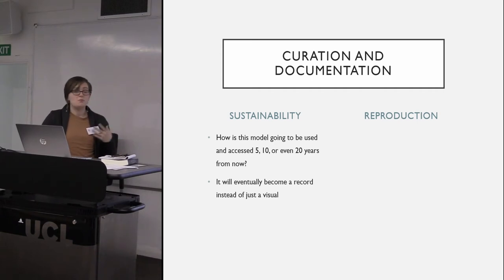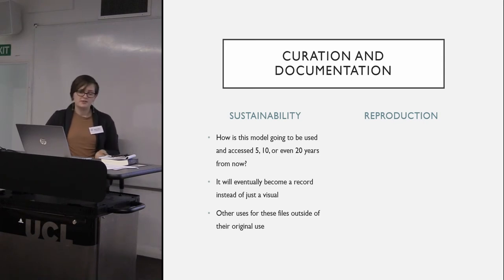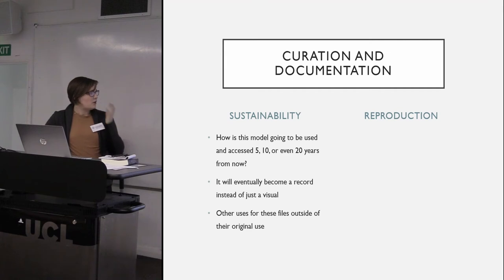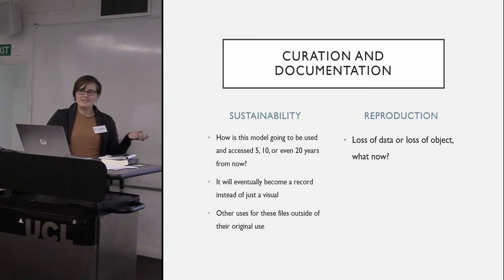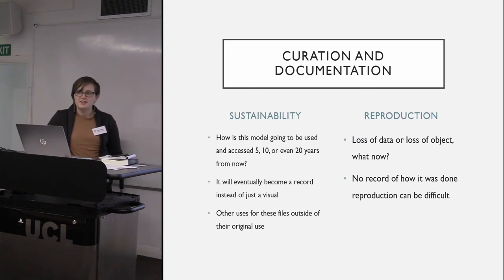In 10 years, someone might actually want to look at this as part of an academic study. And with these 506 raw image files, they can be used for other things - social media or illustrations. But the real key with 3D modeling is the reproduction factor. Because if you lose this data, it's gone for good. And if the object is lost as well, that's it - there's nothing you can do. If there's no record of how it was done, reproduction is quite difficult.